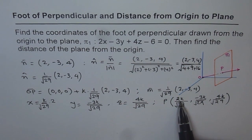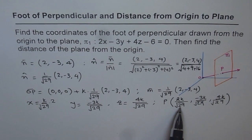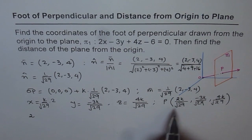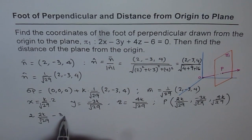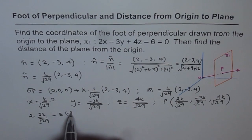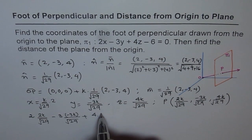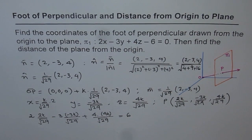Since point P also lies on plane π₁, it must satisfy the plane equation. We substitute the general point P into the plane equation 2x - 3y + 4z - 6 = 0, giving us: 2×(2K/√29) - 3×(-3K/√29) + 4×(4K/√29) = 6. Now we solve for K.